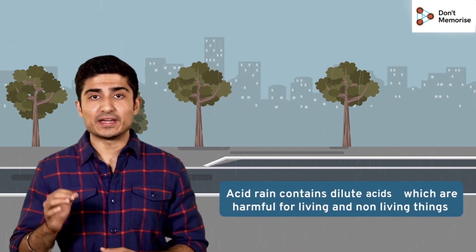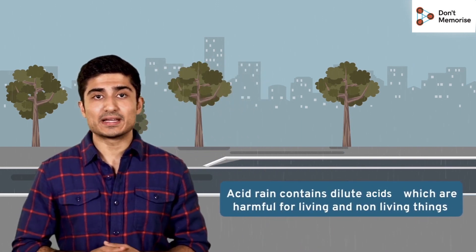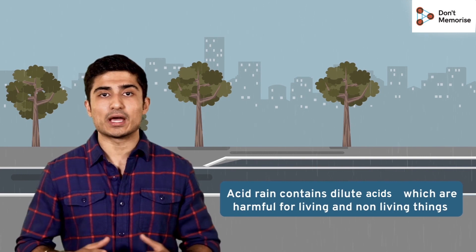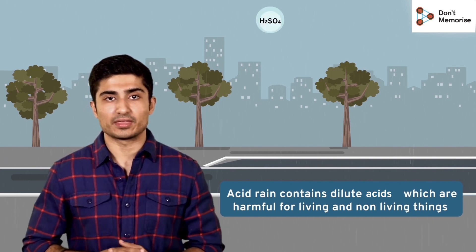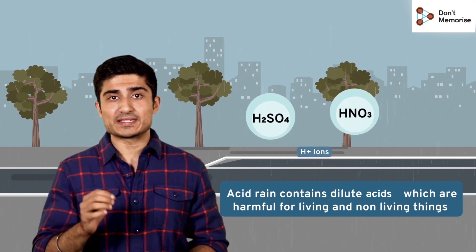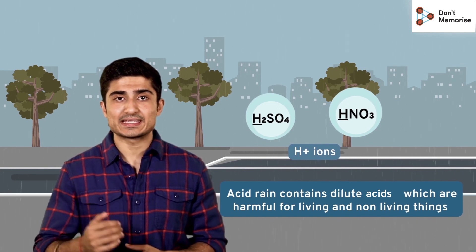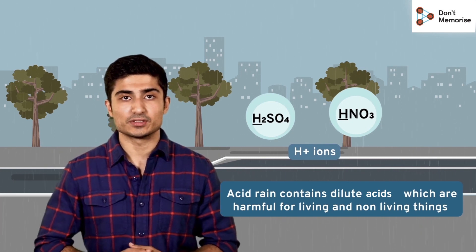Acid rain contains a very dilute amount of acids but is still capable of causing huge damage to living and non-living things. In fact, it is the presence of hydrogen ions in the acid that makes it acidic in nature.